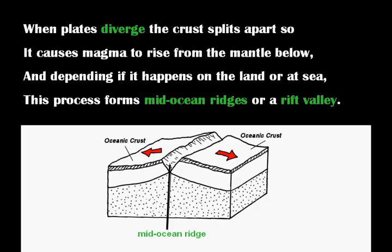When plates diverge, the crust splits apart, so it causes magma to rise from the mantle below. And depending if it happens on the land or at sea, this process forms mid-ocean ridges or a rift valley.